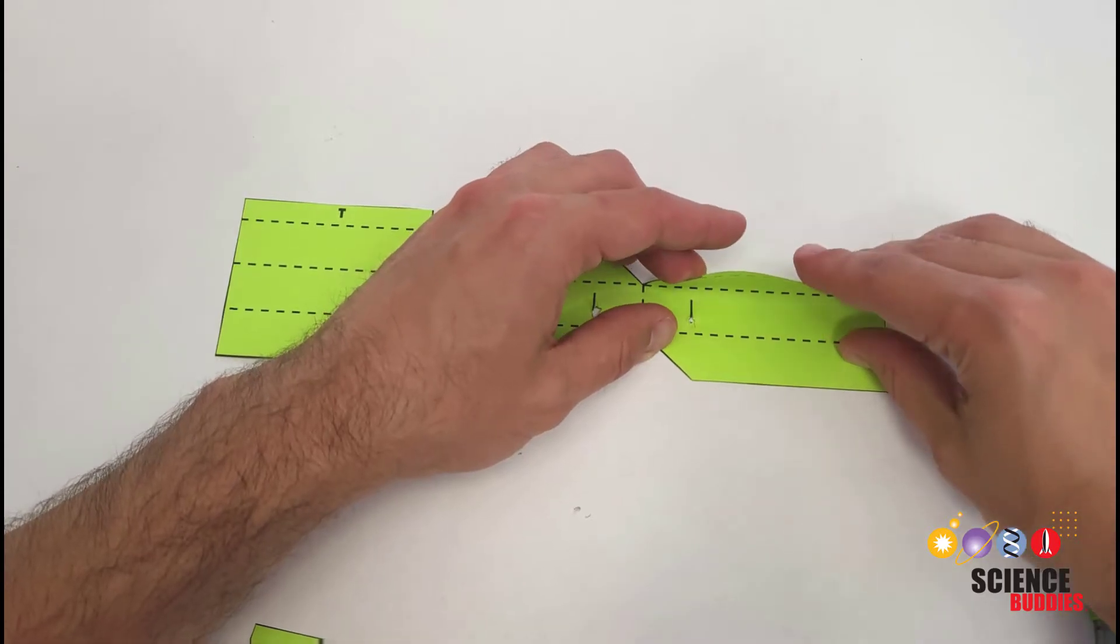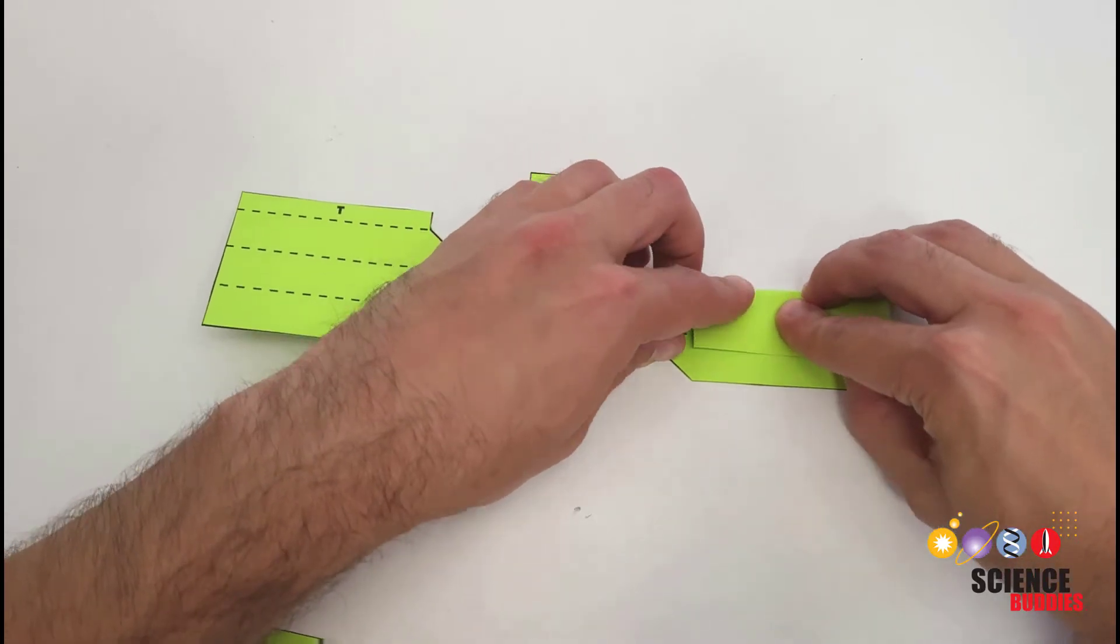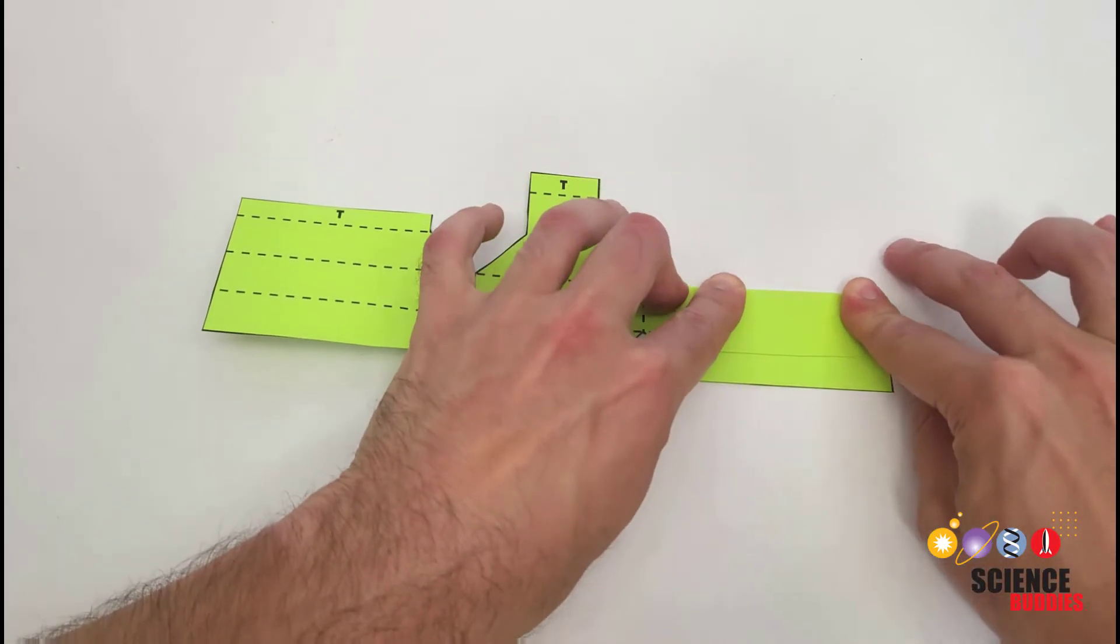Once you're done with all the cutting, fold and crease along all the dashed lines, then fold the paper flat again.